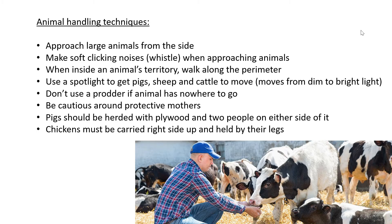Secondly, make soft clicking noises or a soft whistle when approaching the animal so they know you're coming — make yourself known to them. Thirdly, when inside an animal's territory, walk along the perimeter. This means if you go into a kraal or paddock, keep to the fence. Keep to the fence so that in the event the animal wants to storm you, you can actually escape without harm.